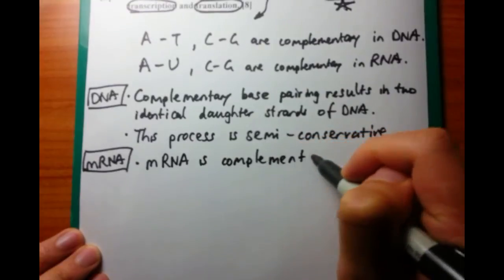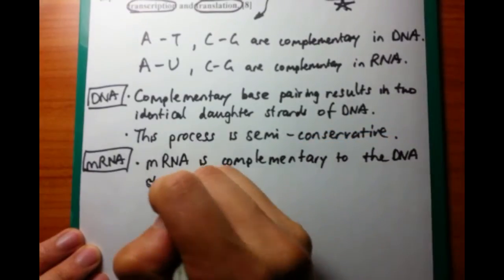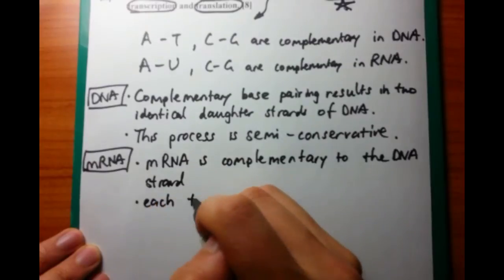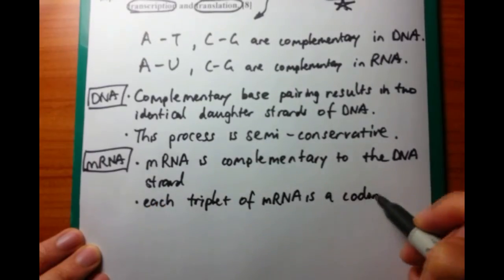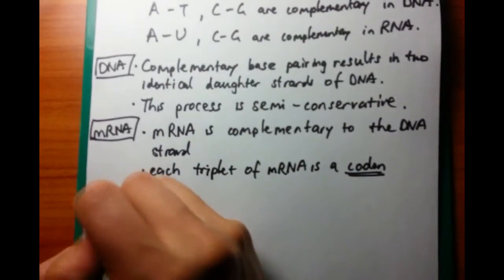Now if we move on to mRNA, we need to talk about how mRNA is complementary to the DNA strand using the above rules, A to U, C to G, and that each triplet of mRNA is defined as a codon.